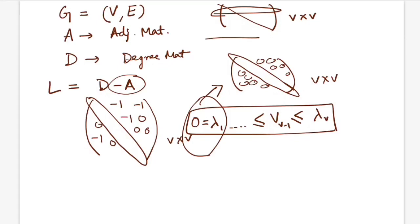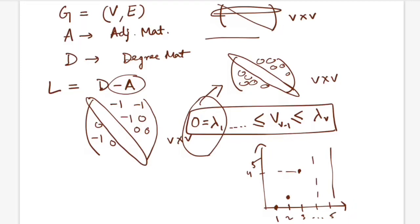A typical way to define the number of partitions is the spectral gap. On the x-axis you plot the eigenvalue index; on the y-axis the actual eigenvalue. For example, if eigenvalues are 0, 1, 4, 5, 7, the largest gap between consecutive values is from index 2 to 3 (a gap of 3), so you would choose k=2 as the number of partitions. This is the spectral gap idea.